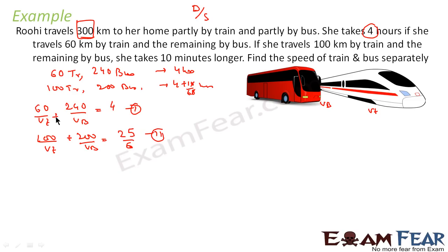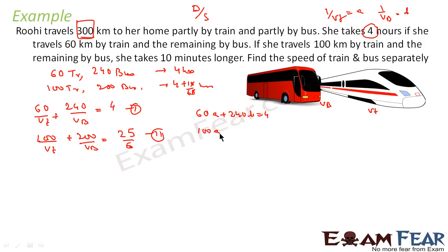These are not linear equations, so we convert them. Let 1/Vt = a and 1/Vb = b. The equations become: 60a + 240b = 4, and 100a + 200b = 25/6. Multiplying through, we get two linear equations to solve.